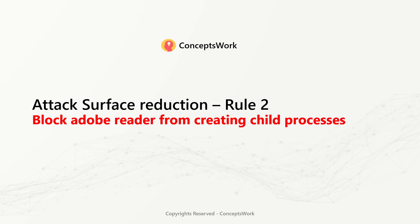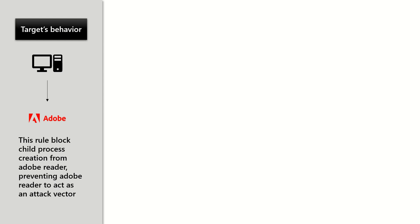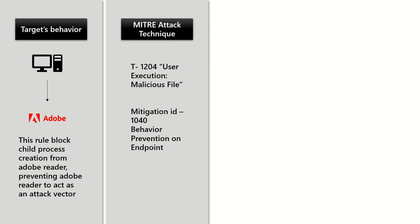Attack Surface Reduction Rule 2: Block Adobe Reader from Creating Child Processes. This rule targets the behavior wherein child process creation from Adobe Reader is blocked, preventing Adobe Reader from acting as an attack vector. The attack technique targeted is T1204, which is User Execution: Malicious File, and the mitigation ID is M1040.